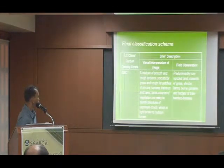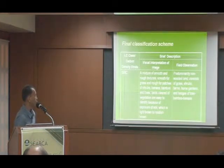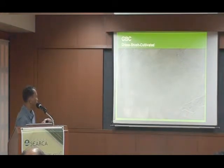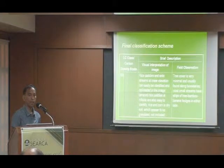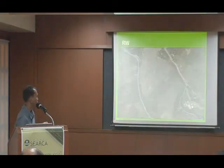The grass-brush cultivated class, which I call GBC, is a mixture of smooth and rough texture in imagery — smooth for grass, and rough for patches of shrubs, banana, bamboo, and trees. Rice paddies and water, including wide streams, are quite easy to delineate in imagery because of the low reflectance value of water, which typically appears black.